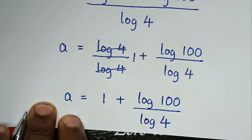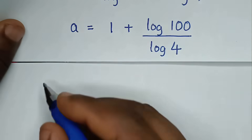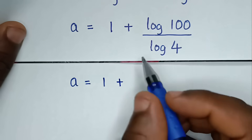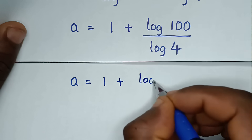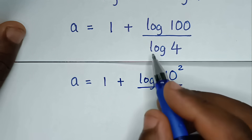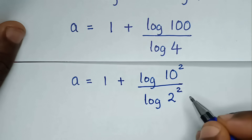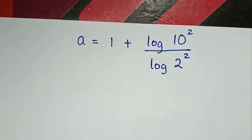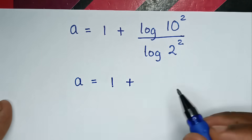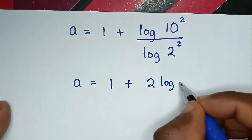Then in the next step, it will be a is equal to 1 plus here log of 100. Now log of 100 is the same as log of 10 squared, over log of 4. And 4 is 2 squared. Then into here, this square will move to the base, so it will be 2 log of 10 over 2 log of 2.